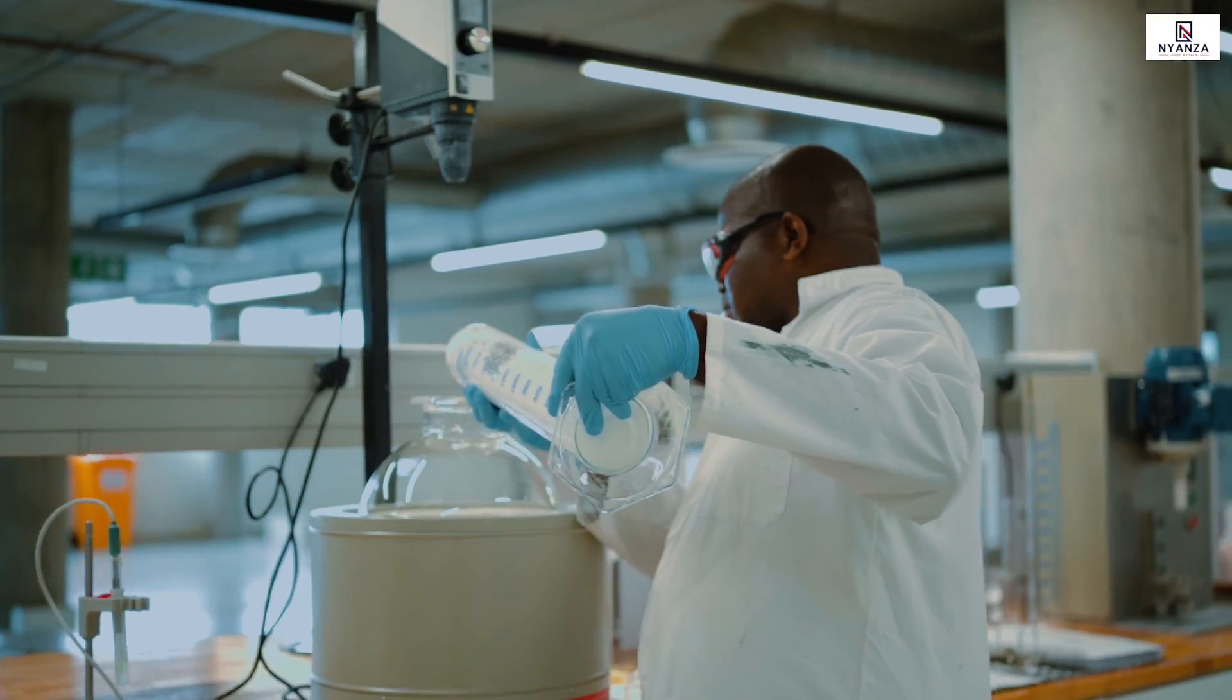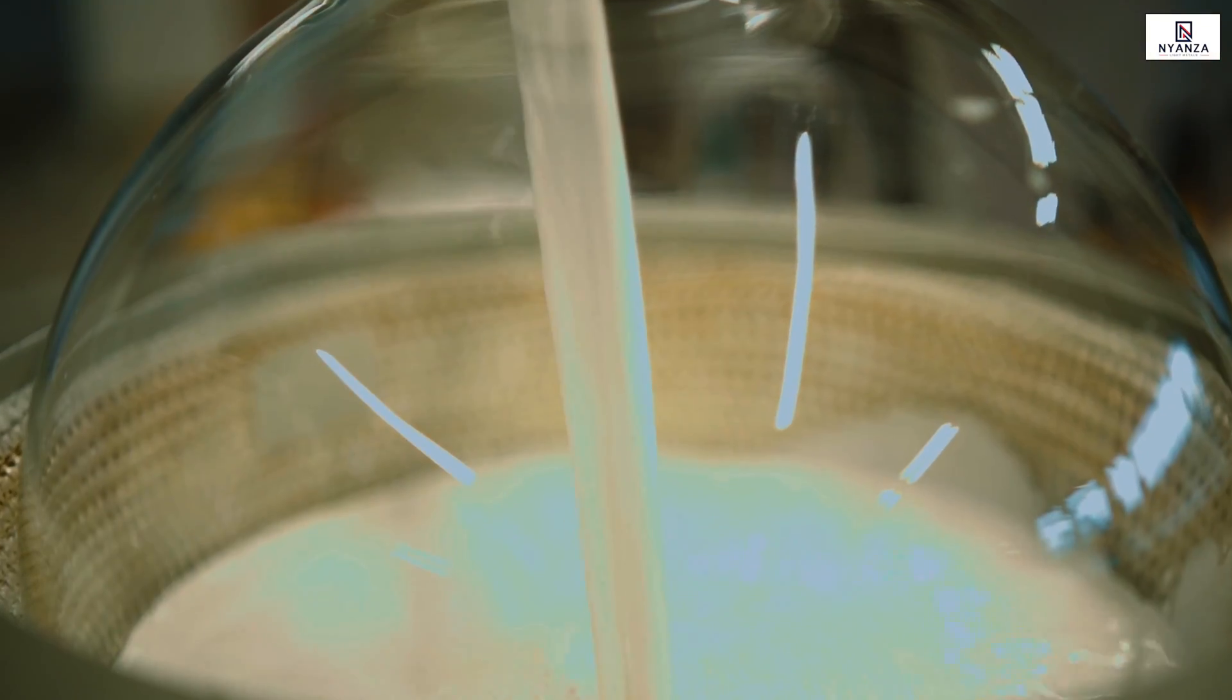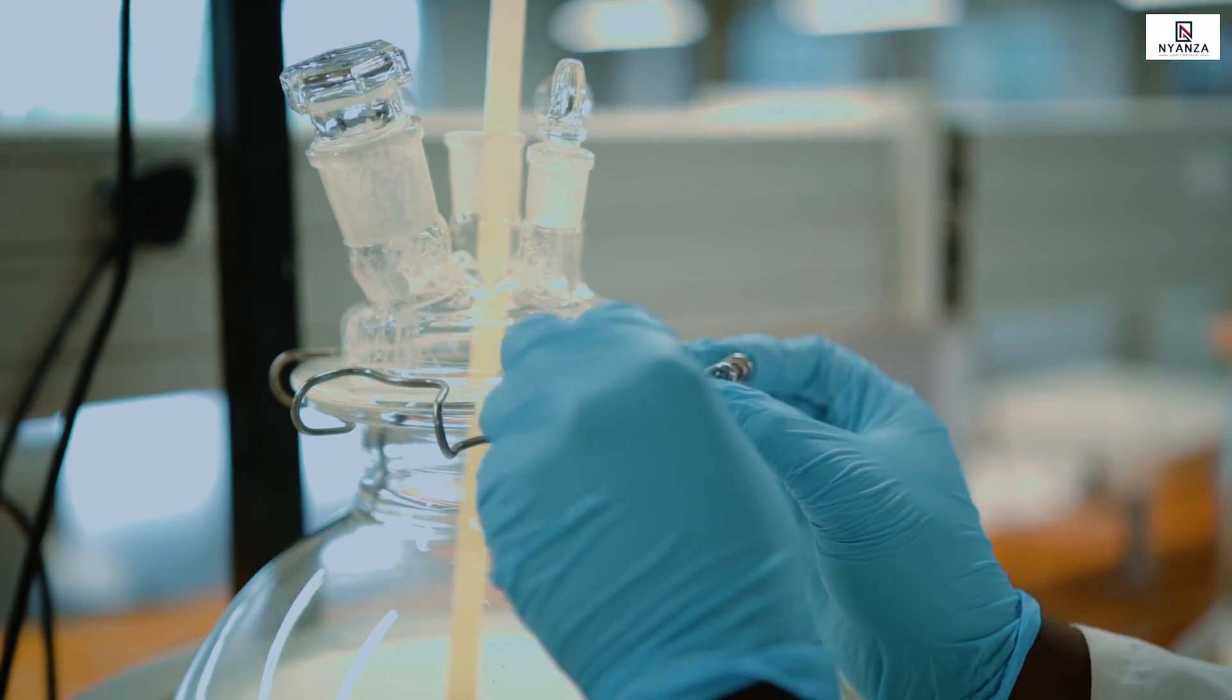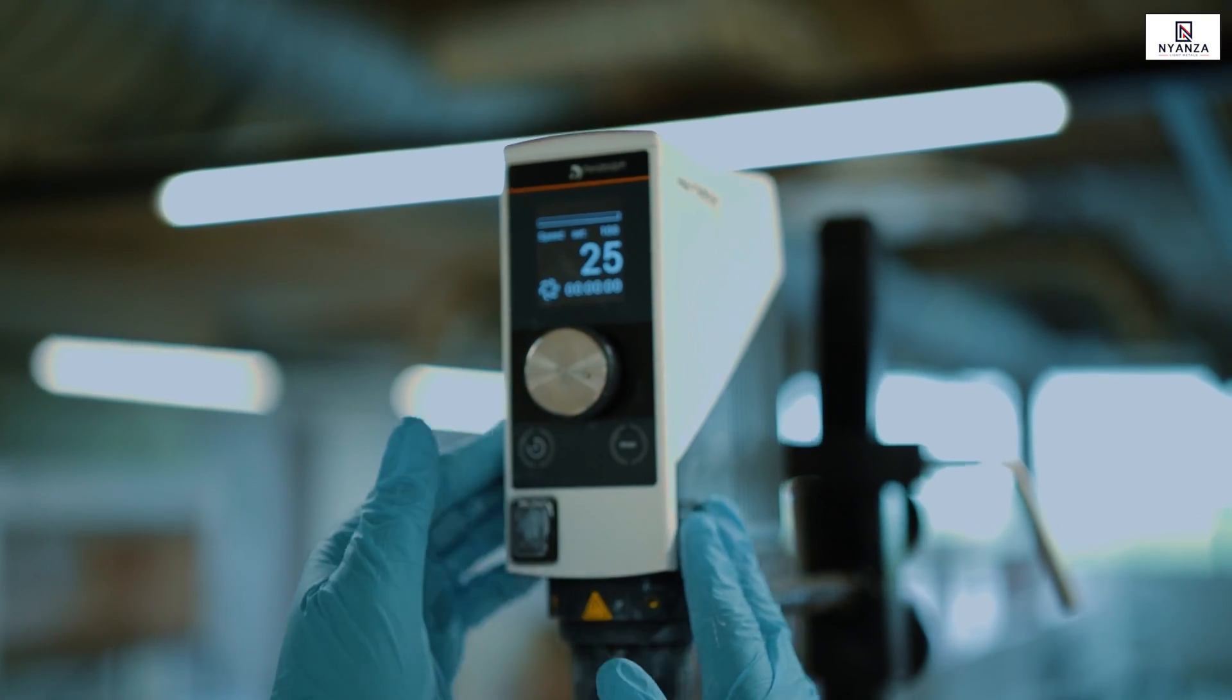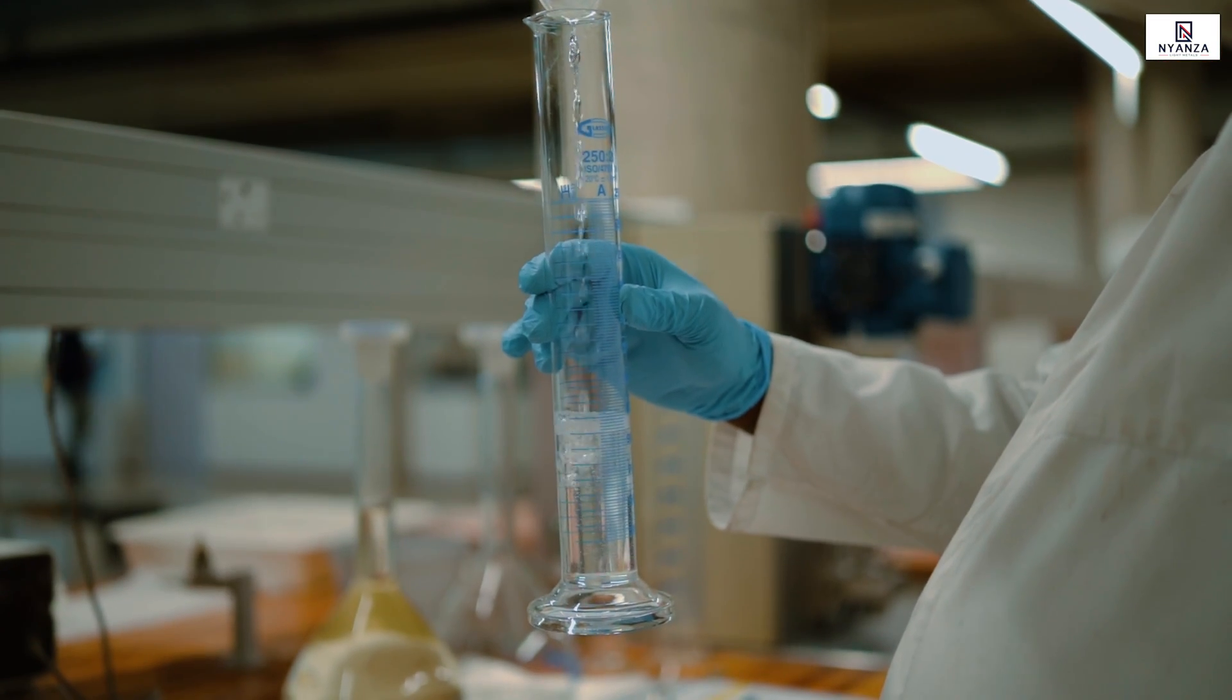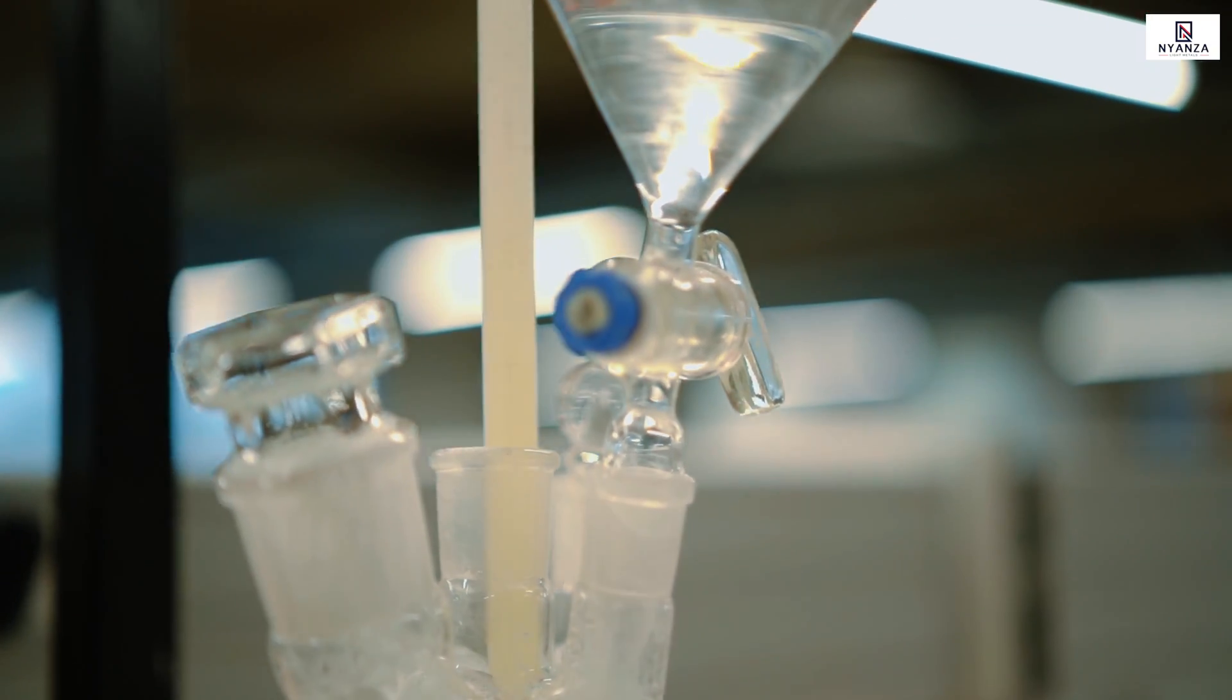Coating: The wet mill slurry is then surface treated by coating individual titanium dioxide particles with inorganic compounds and is then post-treated with organic compounds under controlled conditions. This step of production improves the durability as well as the dispersibility of the pigment in formulation.